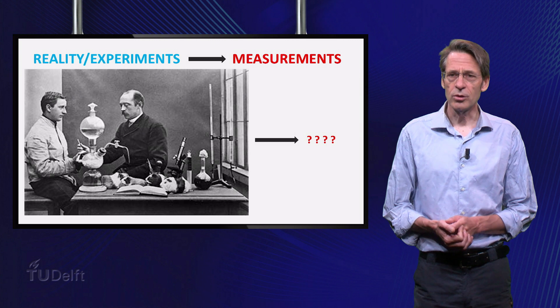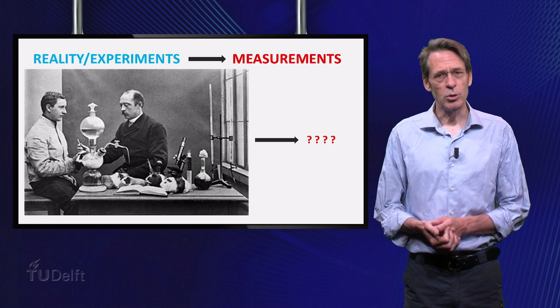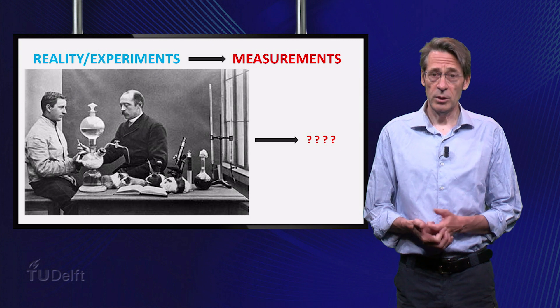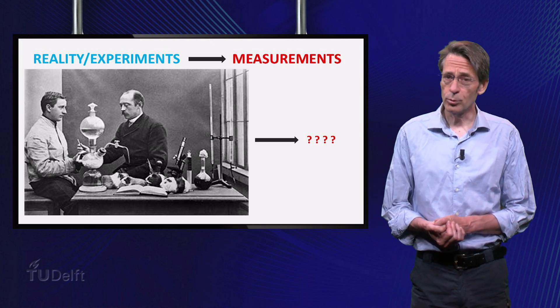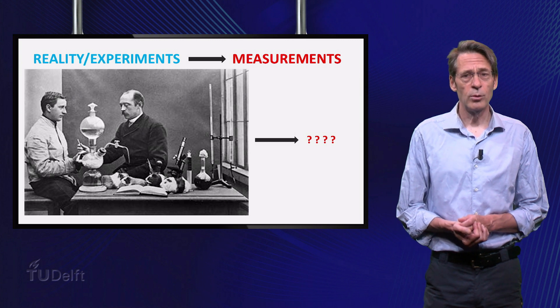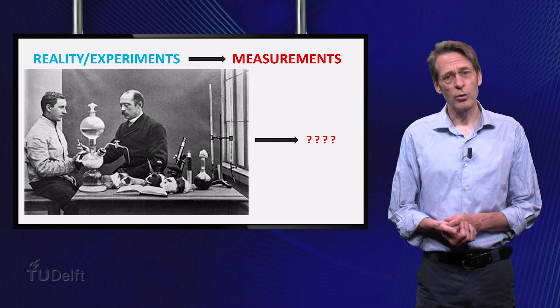Random variables describe in a quantitative way situations where multiple outcomes are possible, in some way depending on chance. They sort of convert outcomes to numbers and also tell you what are the probabilities of the possible numbers.